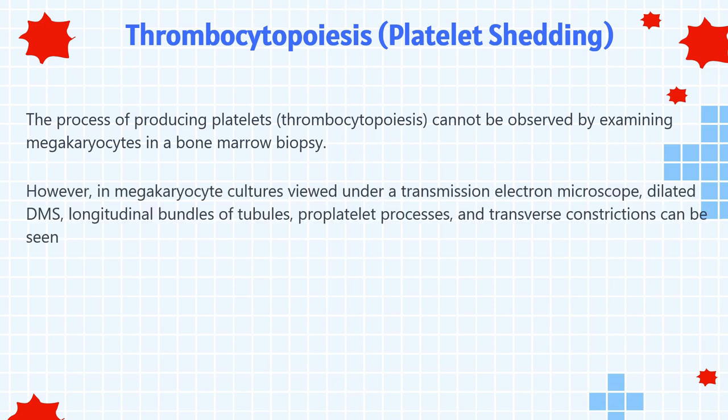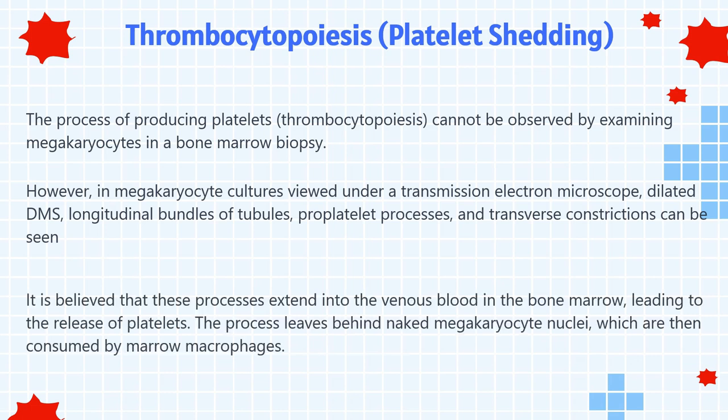The process of producing platelets cannot be observed by examining megakaryocytes in a bone marrow biopsy. However, in megakaryocyte cultures viewed under a transmission electron microscope, dilated demarcation system, longitudinal bundles of tubules, proplatelet processes, and transverse constrictions can be seen. It is believed that these processes extend into the venous blood in the bone marrow, leading to the release of platelets. The process leaves behind naked megakaryocyte nuclei, which are then consumed by marrow macrophages.